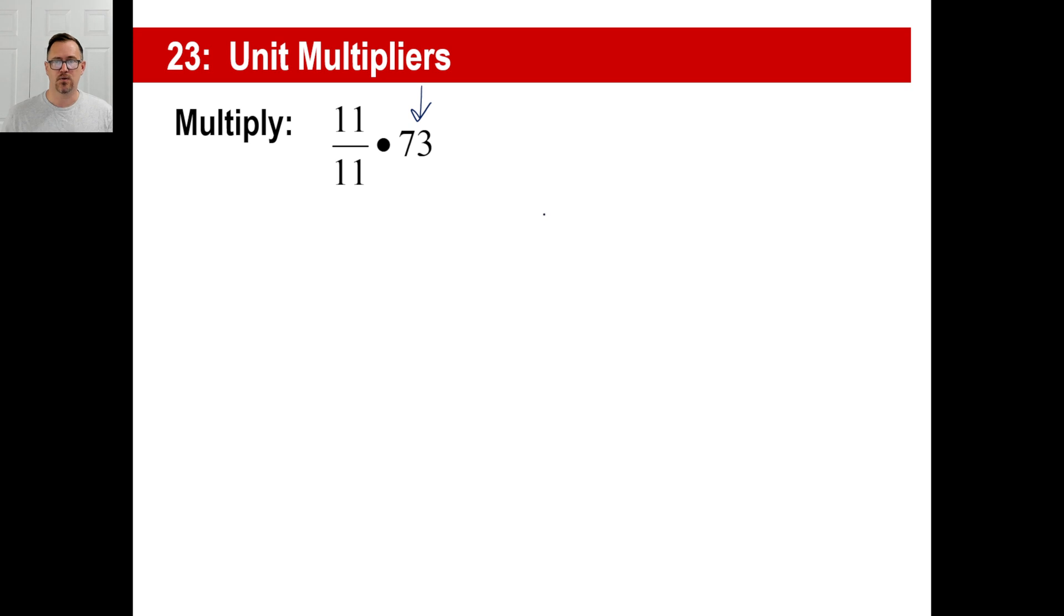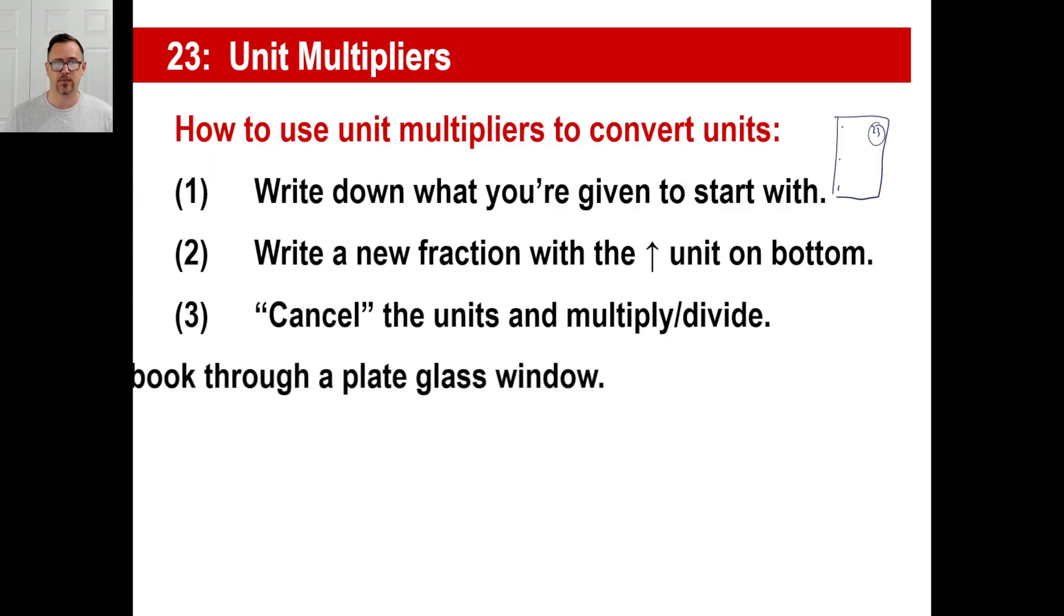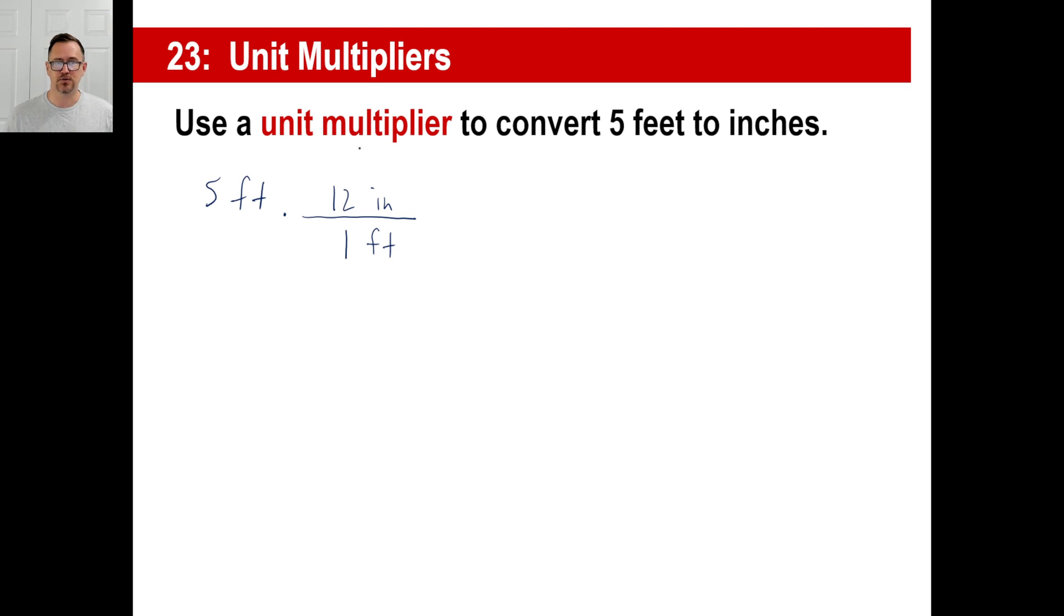When you see a fraction like this, three over 17 times 17 over four, immediately you know what to do, right? You just go, that's gone, and the answer is three-fourths. That's exactly what you want to do here. So this is what you're going to do. If you want to, you can make it like this if you want. But you're going to cancel out the feet. Boom. Just like you would cancel out numbers in a fraction. So all we need to do is we go, five times 12 is 60. And we even have the unit we want. We have inches. They're asking for inches. We got inches. That's it. Divided by one times one is one. There you go. 60 inches.